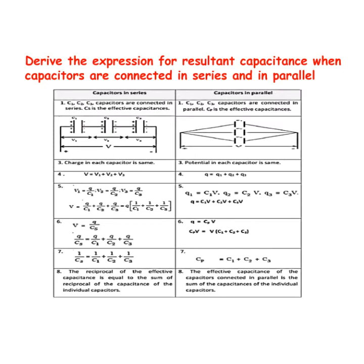When a number of capacitors are connected in series, the reciprocal of the effective capacitance is equal to the sum of the reciprocals of the capacitance of the individual capacitors. This is the result for capacitors in series.